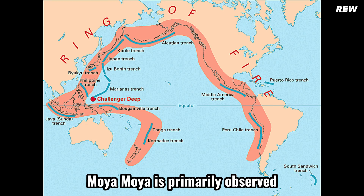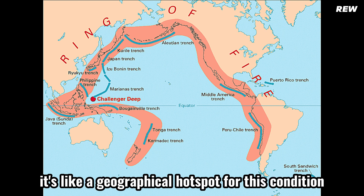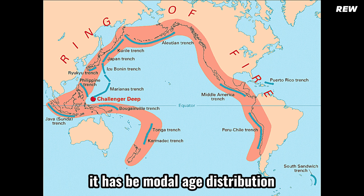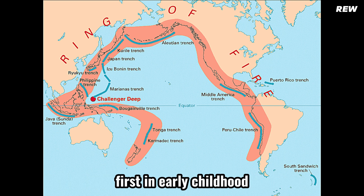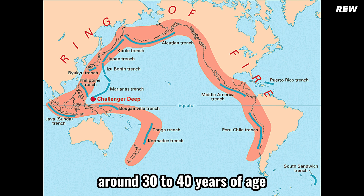Moya Moya is primarily observed in patients from Japan and the Pacific Rim — it's like a geographical hotspot for this condition. It has a bimodal age distribution, with a first peak in early childhood around 4 years of age, and a second peak around 30 to 40 years of age.